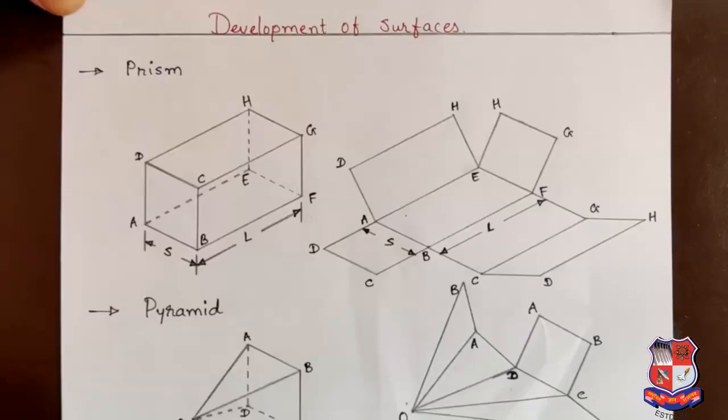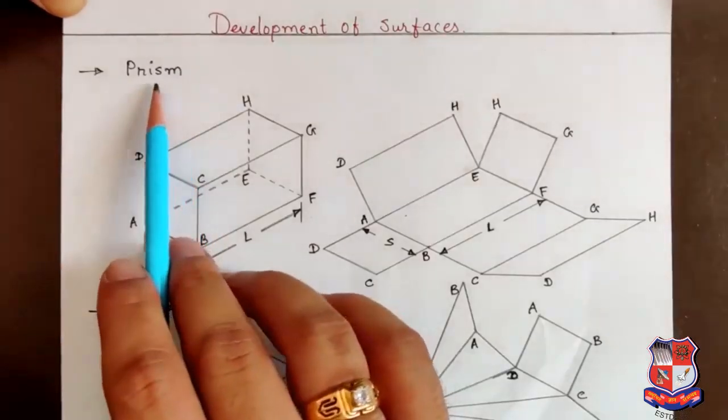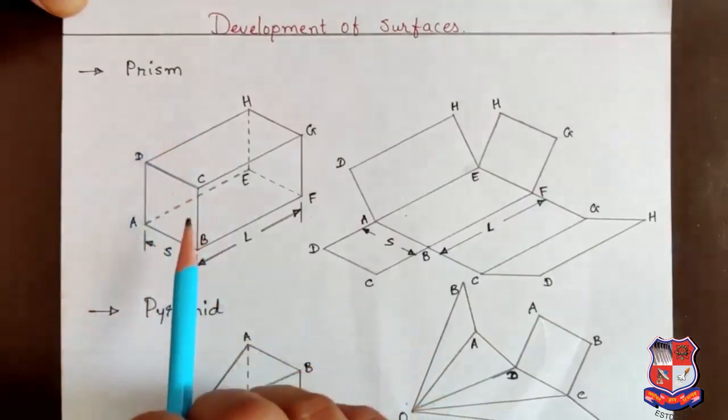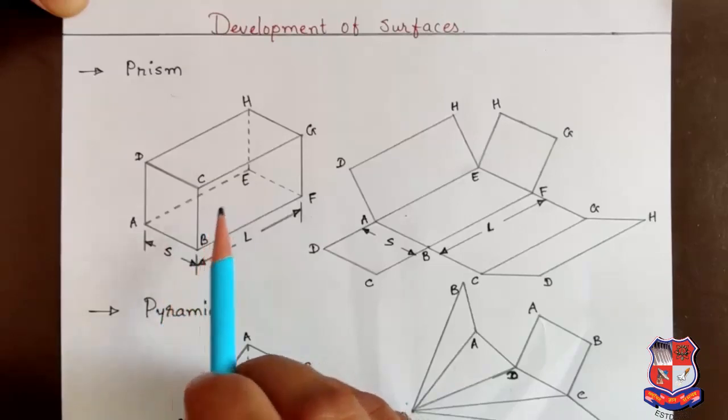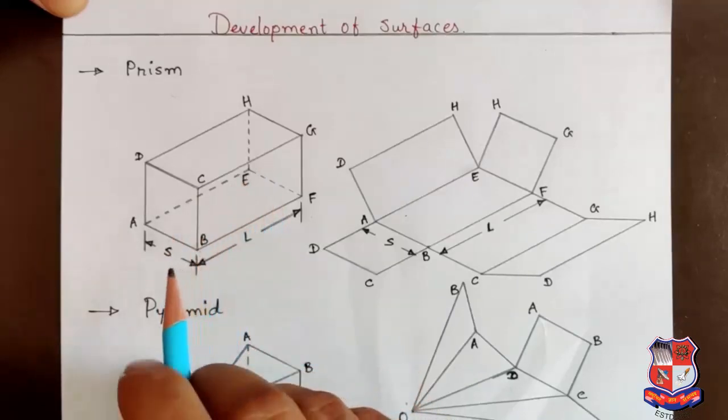First, we will have a prism. Here we have a square prism. In square prism, we will have total six surfaces - four faces and two top and bottom lands.